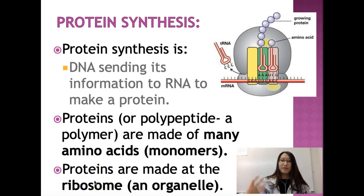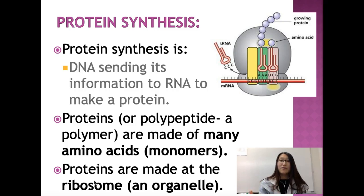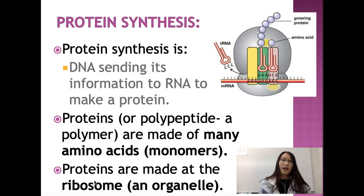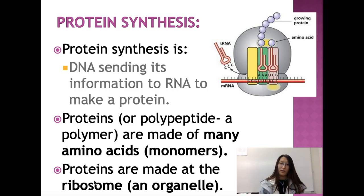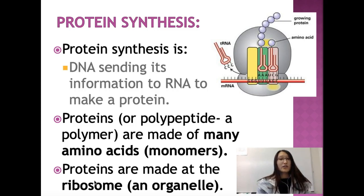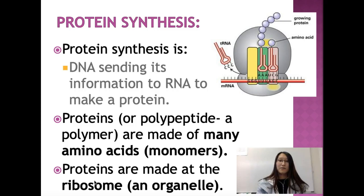Proteins are made at the ribosome. The ribosome is an organelle that floats around the cytoplasm. Some ribosomes are attached to the rough ER — rough endoplasmic reticulum — that's why it's called rough. You can find all ribosomes in the cytoplasm, or cytosol — they're pretty much the same thing.